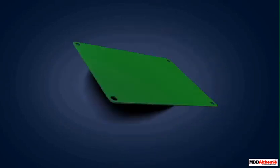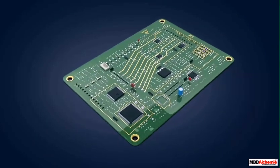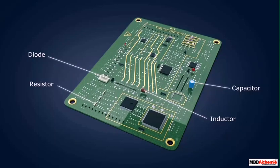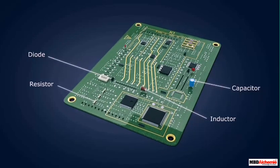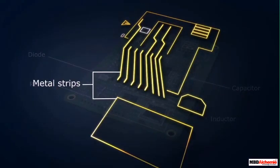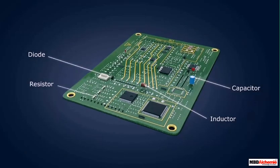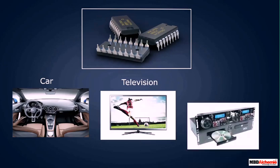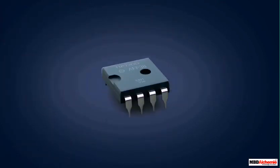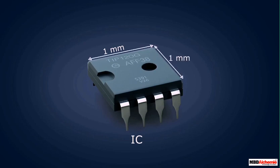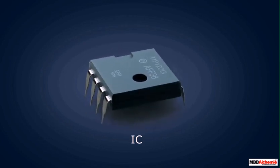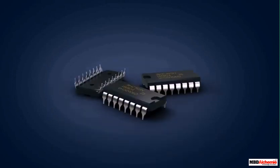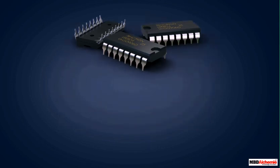An attempt was made to fabricate an entire circuit consisting of many components such as diodes, resistors, inductors, and capacitors on a small single block of a semiconductor, connected with the help of metal strips. This gave rise to the concept of integrated circuits. ICs are found in almost all gadgets like cars, televisions, CD players, and cell phones. The size of an IC is about one millimeter by one millimeter, which is why ICs have made the miniaturization of electronic gadgets possible.